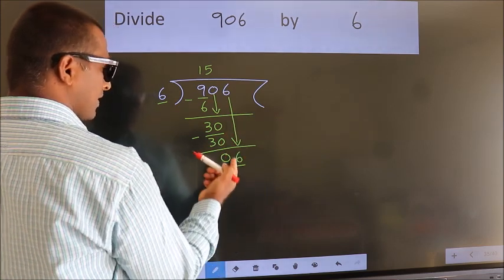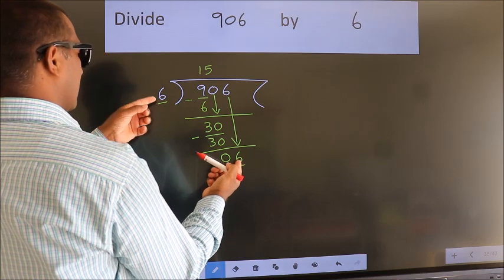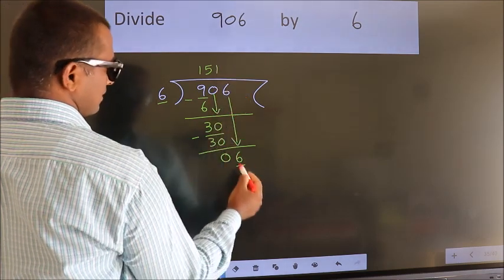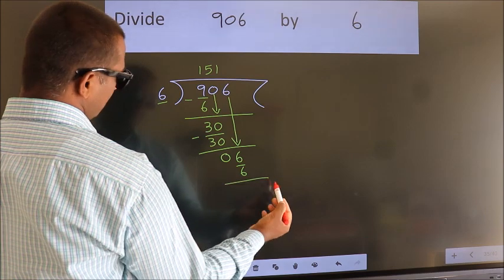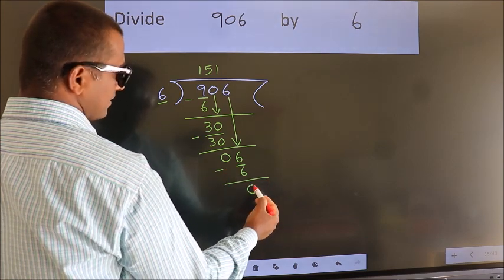So, 6. When do we get 6 in the 6 table? 6 once 6. Now we subtract. We get 0.